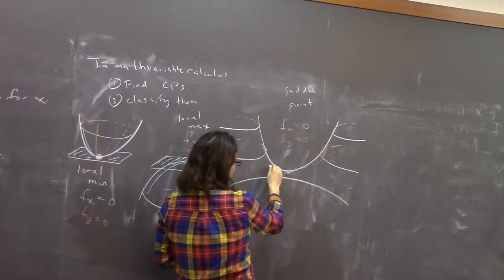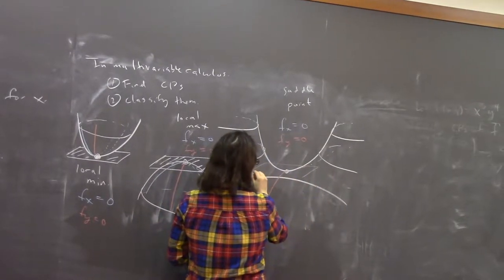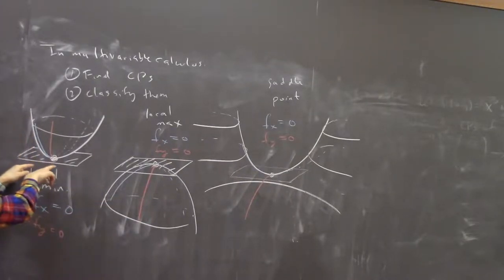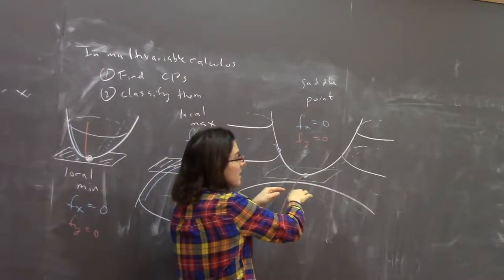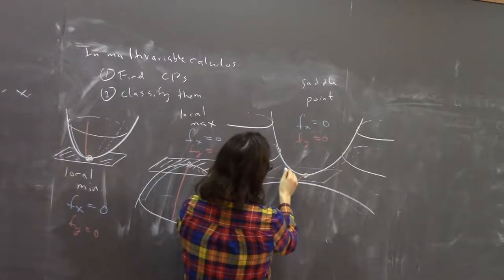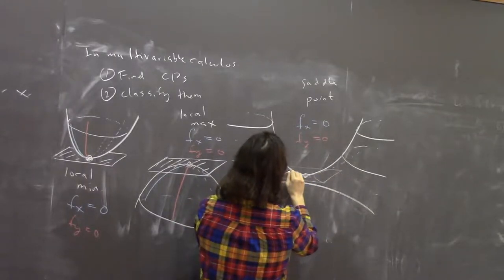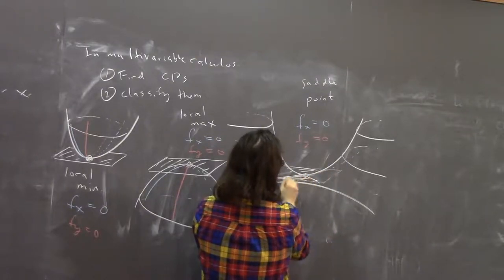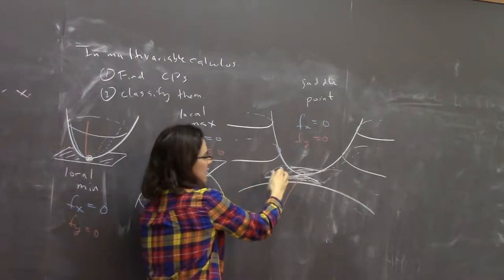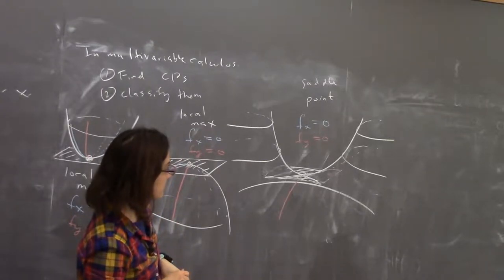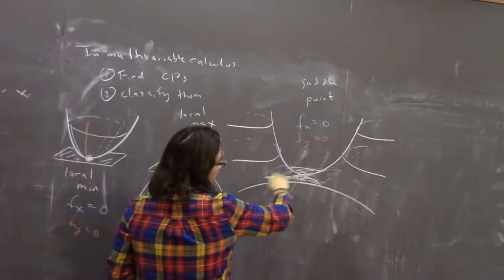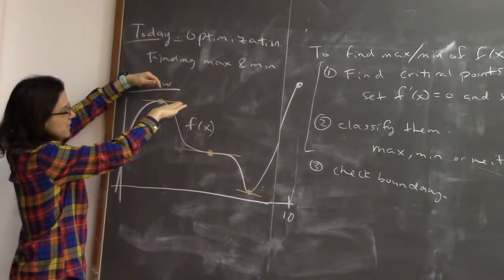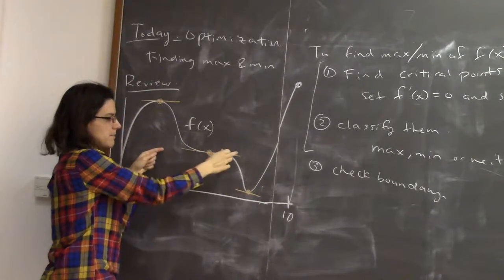At a saddle point, the tangent plane is again horizontal. But something interesting happens: for a local min, the tangent plane was completely above the function; for a local max, the tangent plane was completely below the function. But at a saddle point, the tangent plane is partly above and partly below the function — just like at an inflection point in single variable calculus the tangent line is sometimes above and sometimes below.